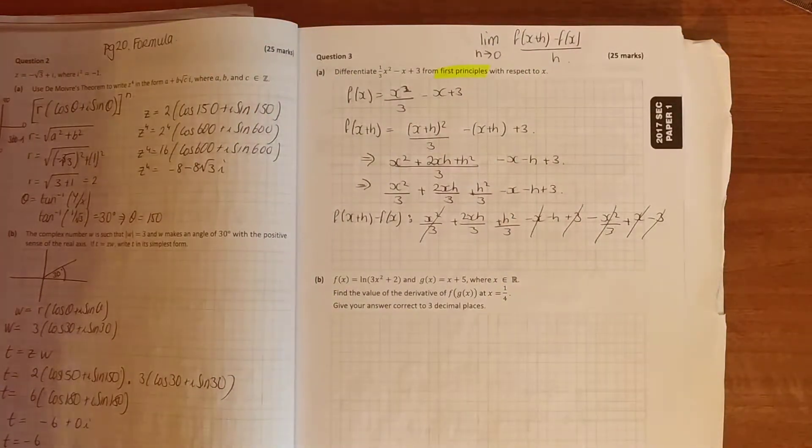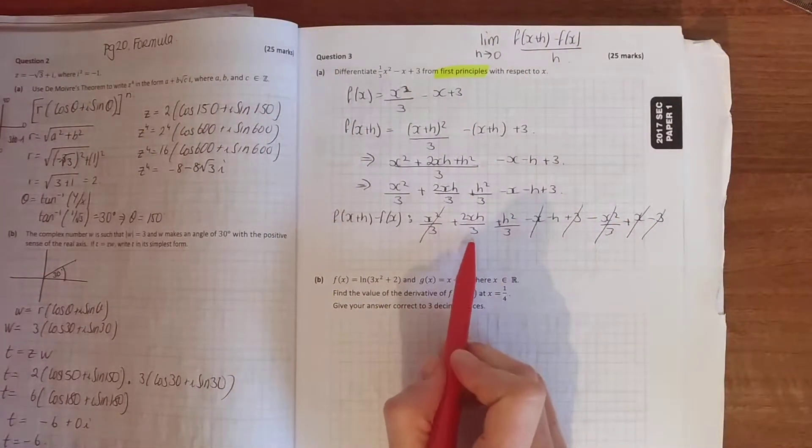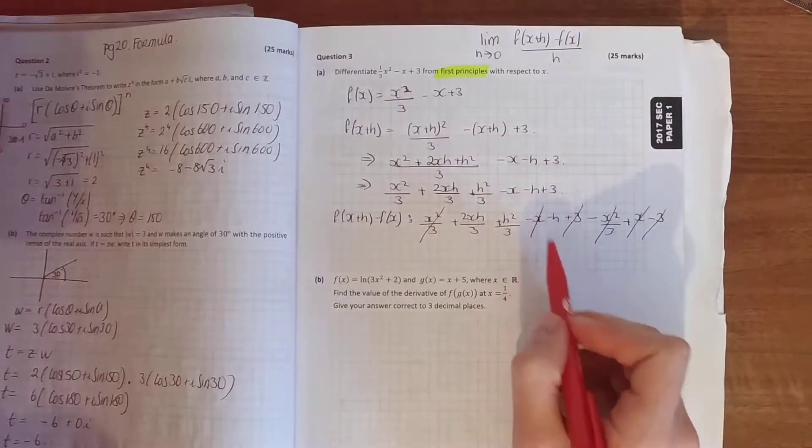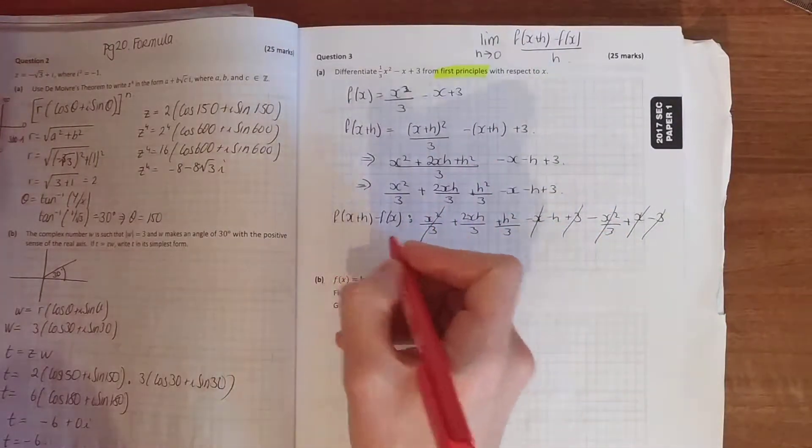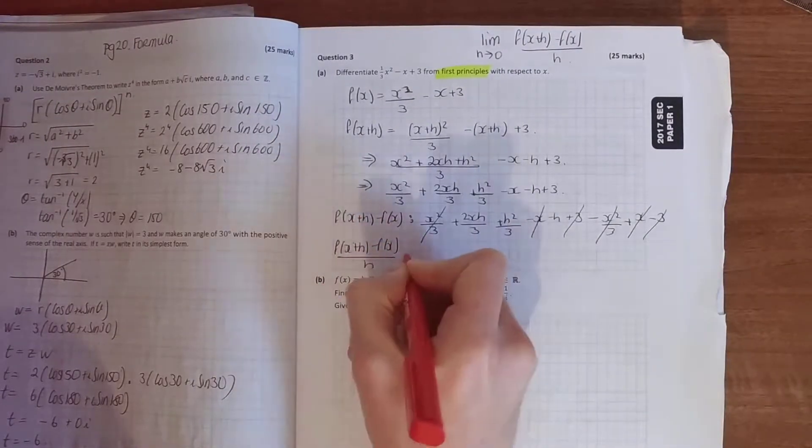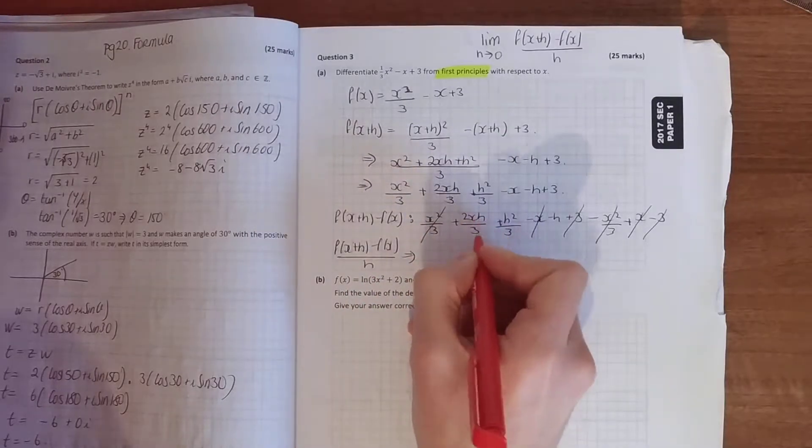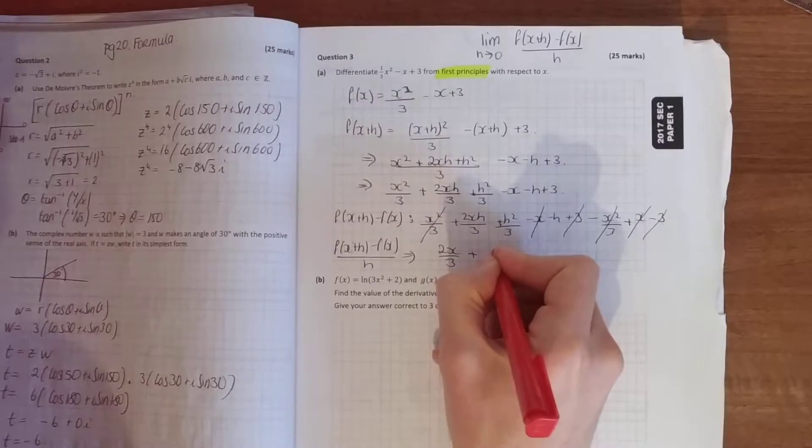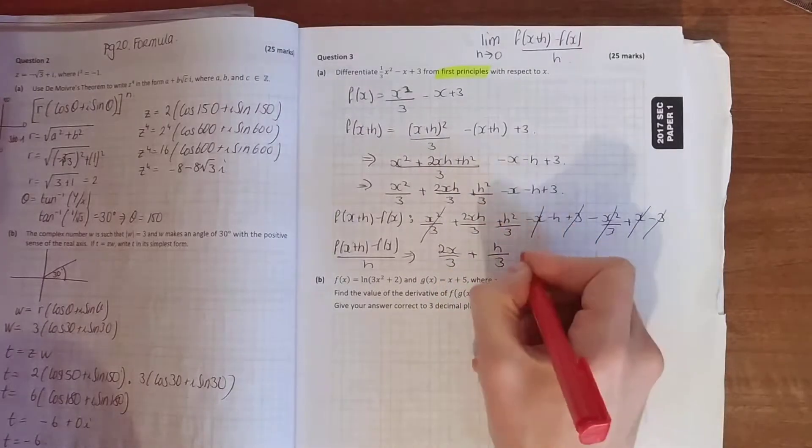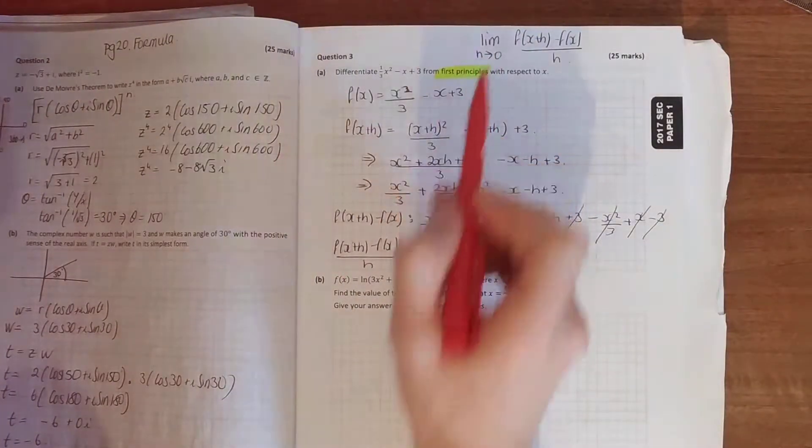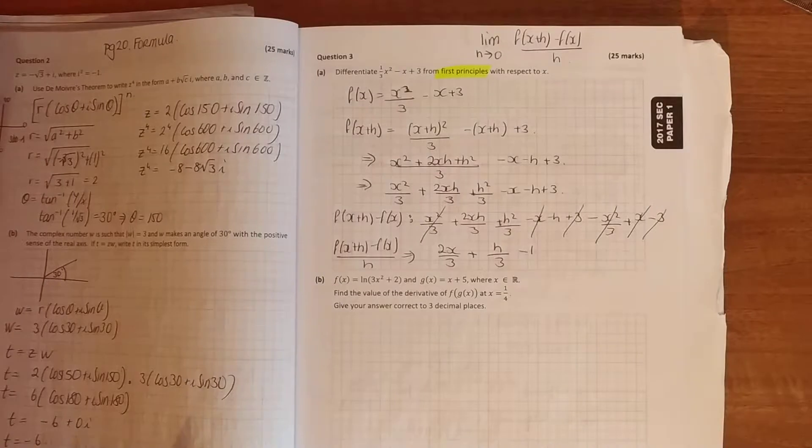Now, what you've got left is your 2xh over 3, your h squared over 3, and your minus h. So, the next step is to divide by h. Divide each of these terms by h. Divide that by h, you get 2x over 3. Divide that by h, you get h over 3. Minus 1. And that's it. And the final thing, sub in 0 for h.